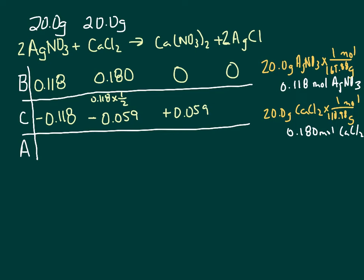So if that's a two-to-two ratio, then that one is going to change the same as the silver nitrate did, but it's going to go up. Plus 0.118 moles.